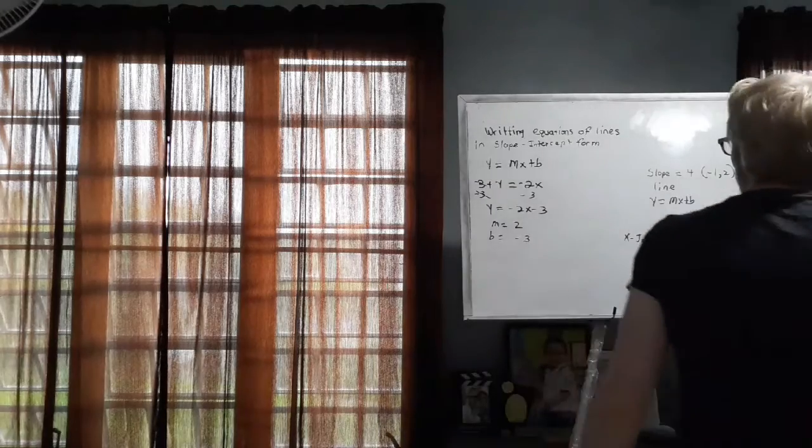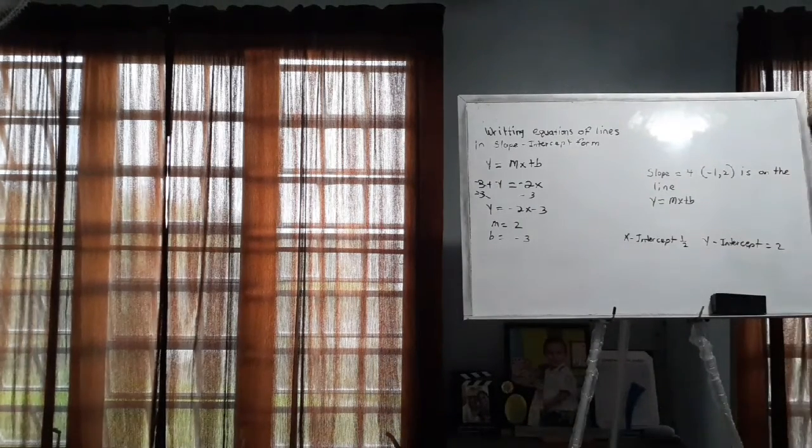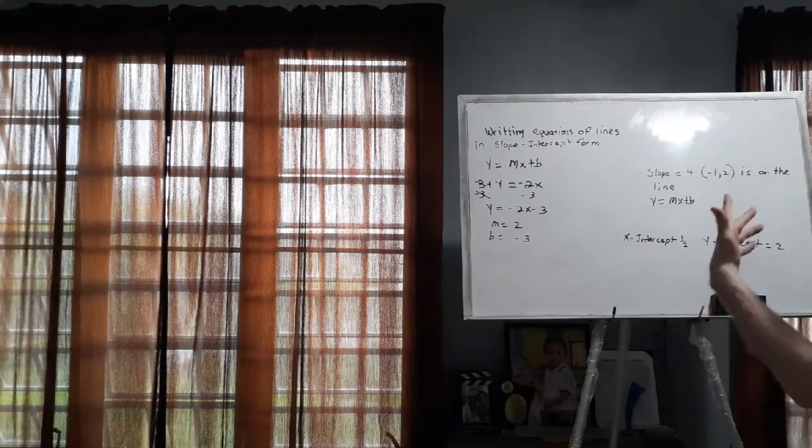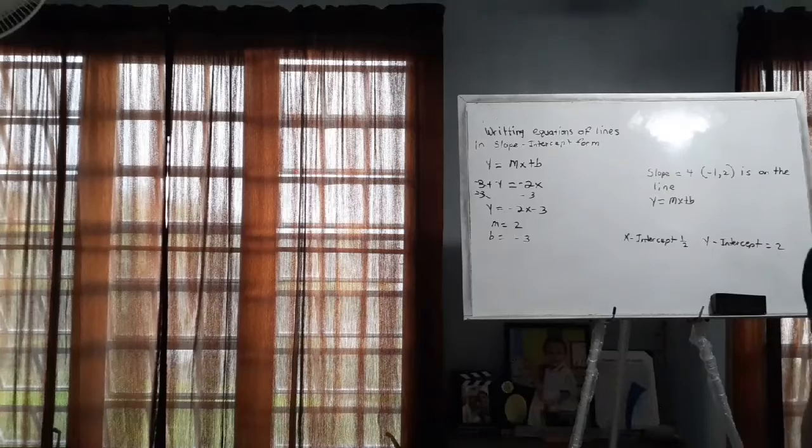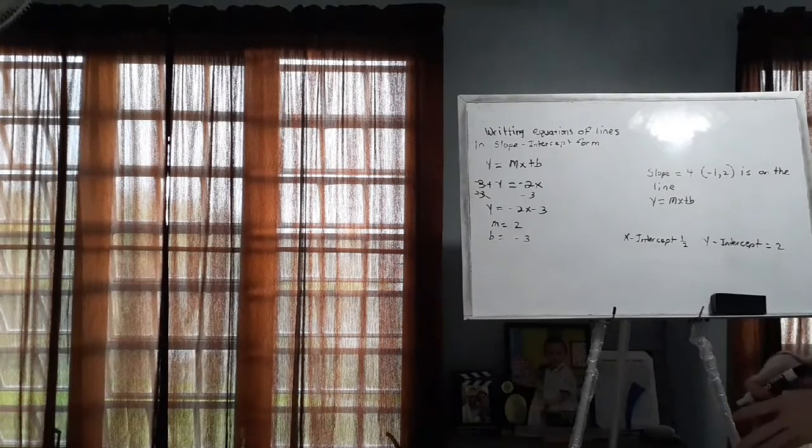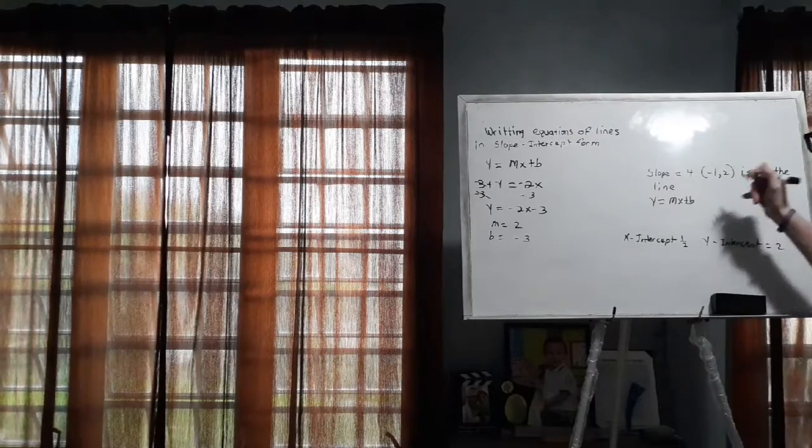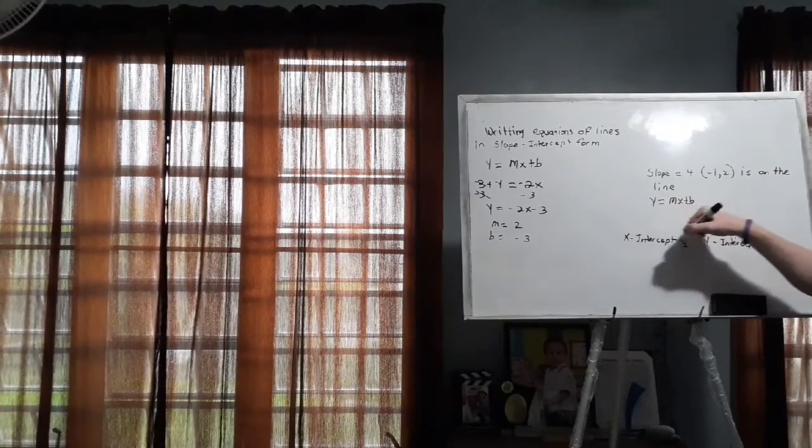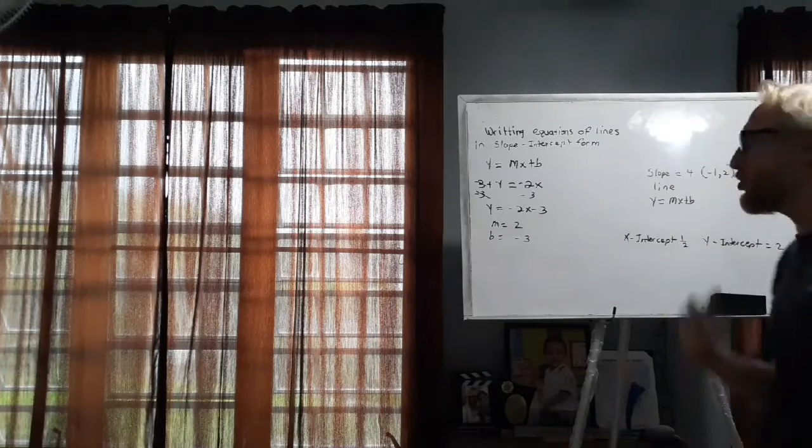Here we have another one where it's not as simple as this. And it's saying that the slope is 4 and then it passes through the point ordered pair negative 1, 2 which is on the line. And I want to write it in slope-intercept form. Well, how do I do that? Well, I have an ordered pair. I don't have a y-intercept and I do have a slope. So our slope is 4. So we are just going to substitute into this equation to find our y-intercept. And then we are going to be able to write our equation in slope-intercept form.